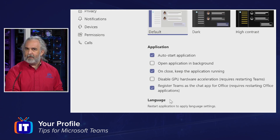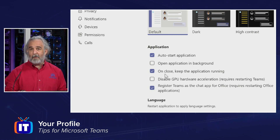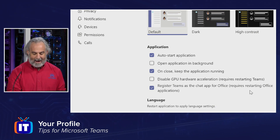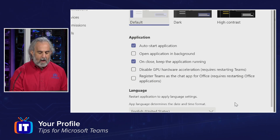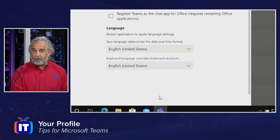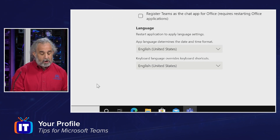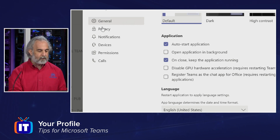I can also specify — and we get asked about this a lot — how do I have Teams start up automatically? It actually starts automatically by default, but I can stop it from doing that if I want to. I can open it in the background, close and keep the app running in my task tray. I can also register Teams as the chat app for Office, which means if anybody tries to chat with any of the Office apps, Teams will be the default. I could also change the default language of Teams and the keyboard layout for those using Teams in a different language. Some of these changes may require restarting Teams, just so you know.